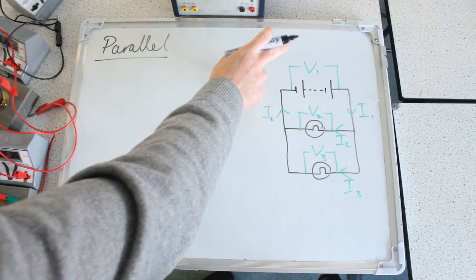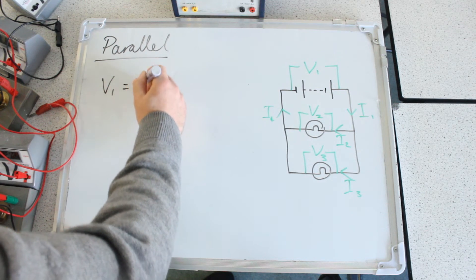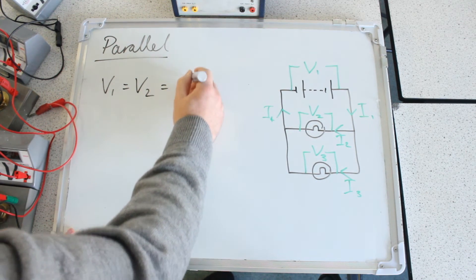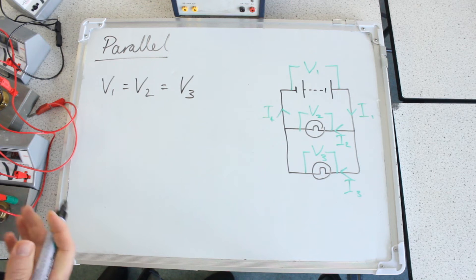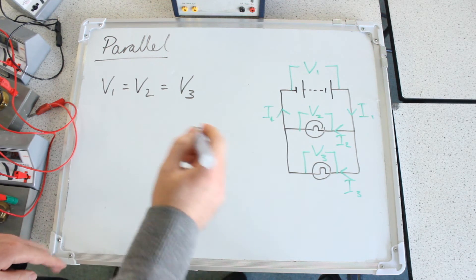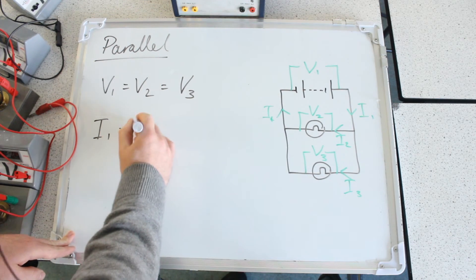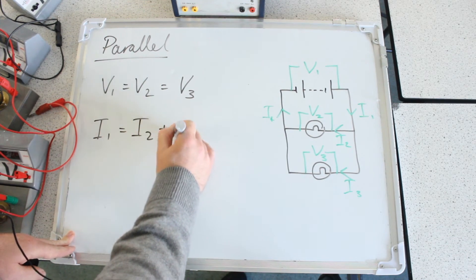Here we saw that in parallel, the first voltage V1 was equal to the second voltage and equal to the third voltage. So in parallel circuits, the voltages are always the same. Now the currents: I1 was equal to I2 plus I3.